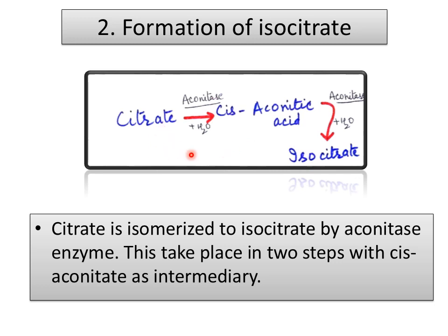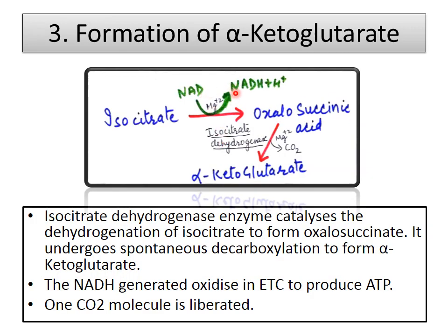In the second step, citrate is converted to its isomeric form, cis-aconitic acid, which is finally converted to isocitrate. So citrate is converted to isocitrate and the enzyme is aconitase. Then in the formation of alpha-ketoglutarate: isocitrate is converted to oxalosuccinate which is then converted to alpha-ketoglutarate. In this step, isocitrate donates its H+ ions to the reducing equivalent NAD+, which is converted to NADH + H+.